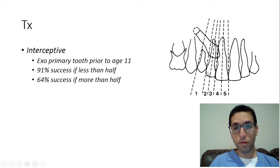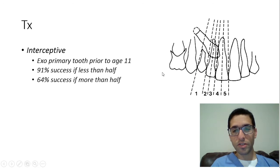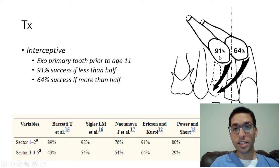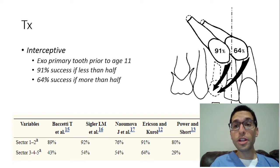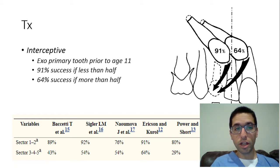Sectors three, four, and five mean it's crossed beyond 50%. Ultimately they grouped it into two categories: anything in sector one or two — less than 50% crossing of the lateral incisor — has a fairly high success of erupting into proper position even without ortho, just by extracting the primary canine prior to eruption: 91% success. Versus sectors three, four, and five, the odds go down to 64%. But 64% is still fairly successful, and if it doesn't work, you can always consider ortho down the road.